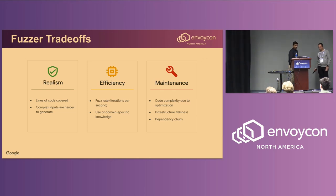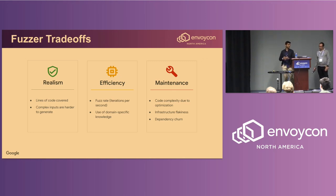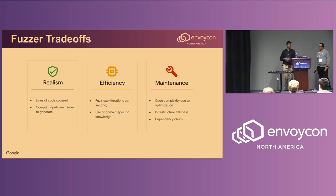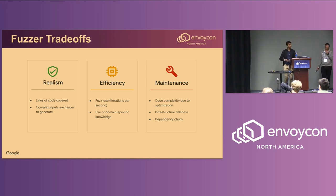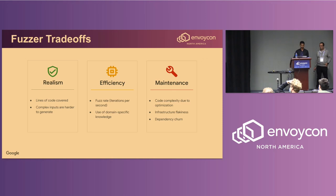There's no one solution that fits every fuzzer. Our best advice is to start by writing a fuzzer that's easy to maintain and efficient, even if it's not so realistic. Let it run on OSS Fuzz for a few days, then measure the code coverage. If you're unhappy with the coverage, look at ways to expand the fuzz input schema while trying to deal with the loss in efficiency by adding some optimizations.